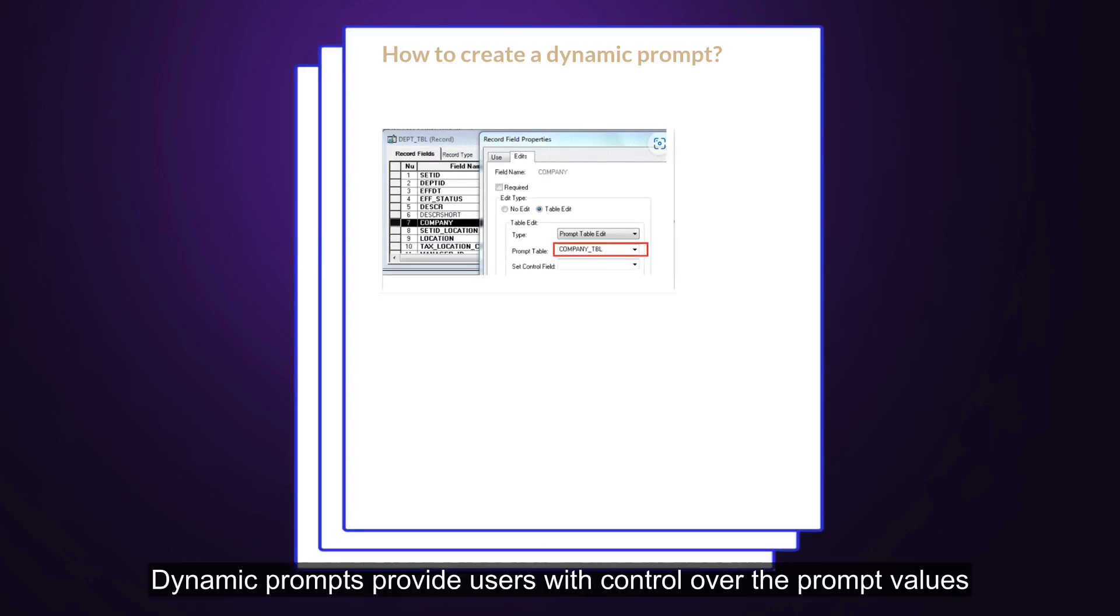Dynamic prompts provide users with control over the prompt values and how they are generated. For example, you can build a prompt dynamically at runtime based on a specific field value respective to the value selected on the first prompt.